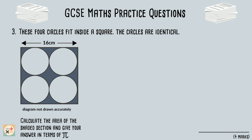For question 3, we are given a diagram of 4 circles inside a square, and are asked to find the area of the shaded section of the diagram. To answer this question, we need to take away the total area of the 4 circles from the area of the square. We will then be left with the area of the shaded section only.